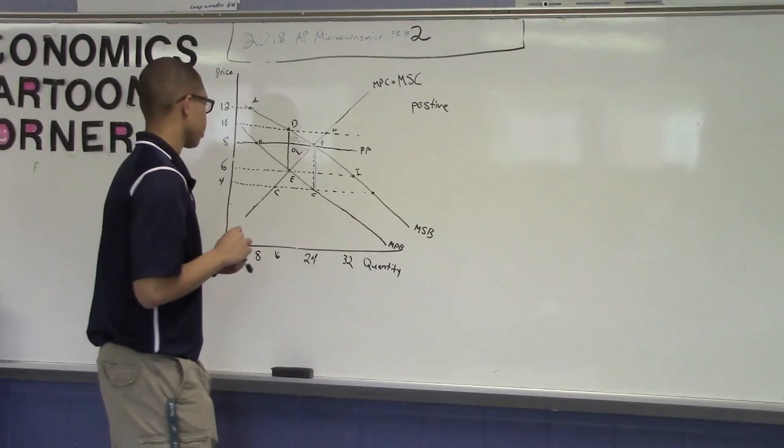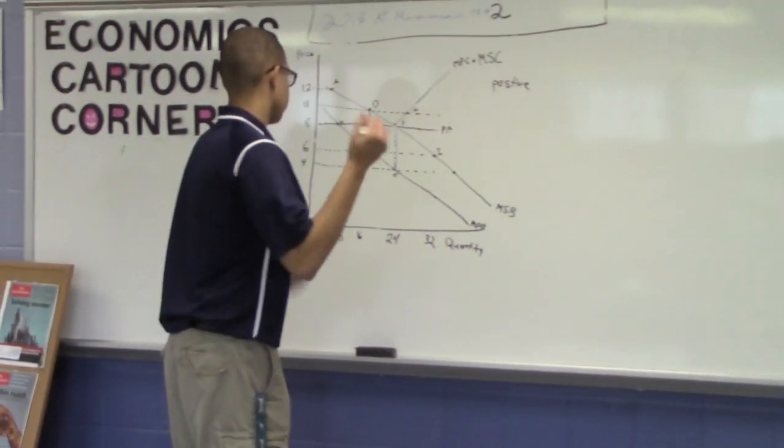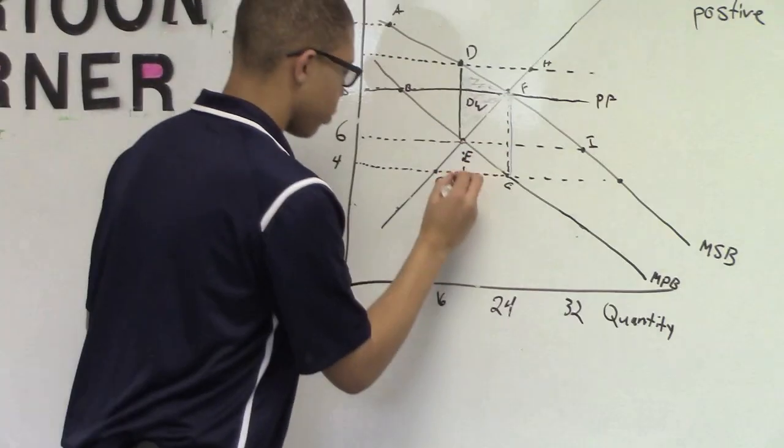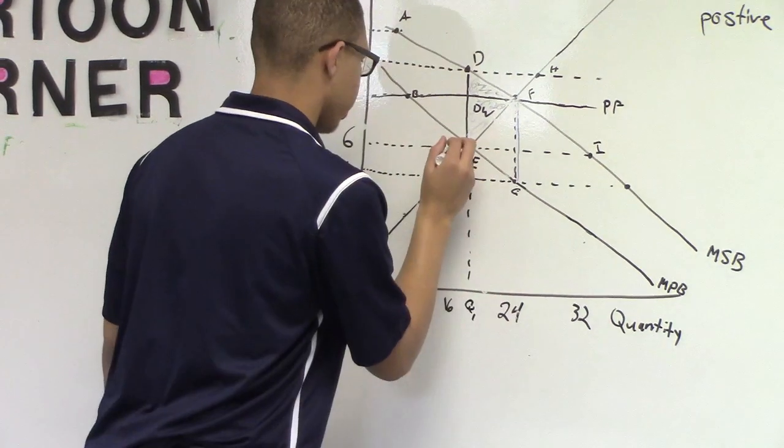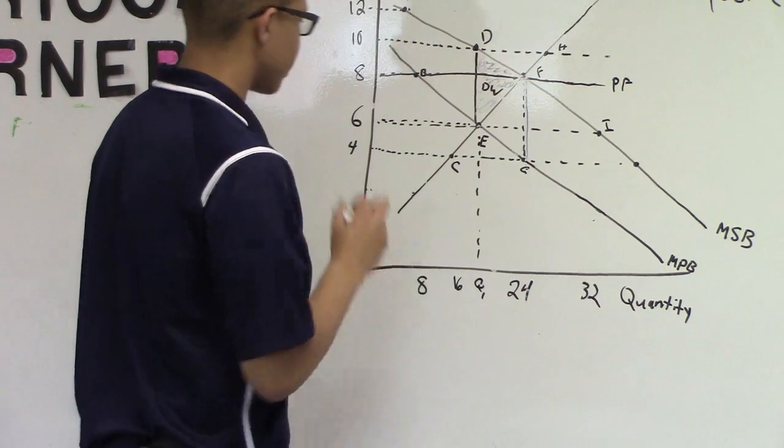Letter B. Using the numbers on the graph, identify the market equilibrium price and quantity. Well, the market equilibrium price would be at point G, which would be right here, which is $6, and producing at 16 quantity.